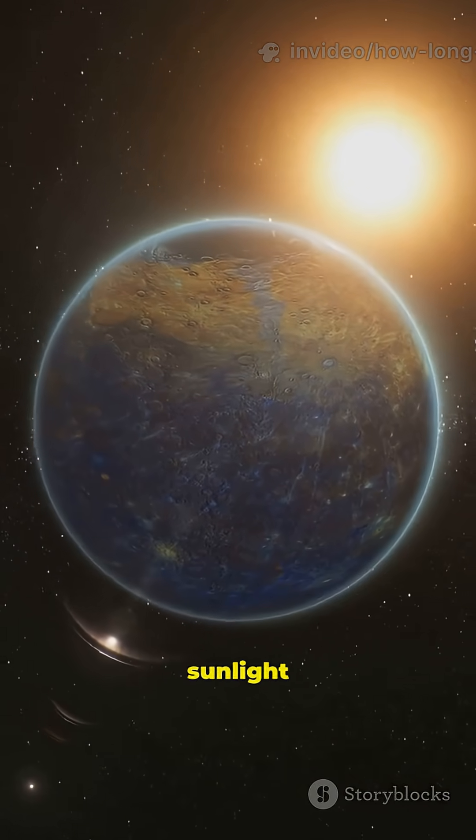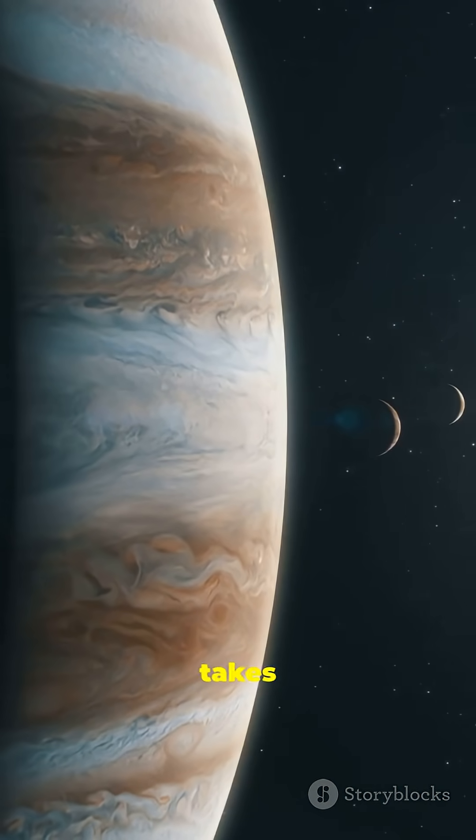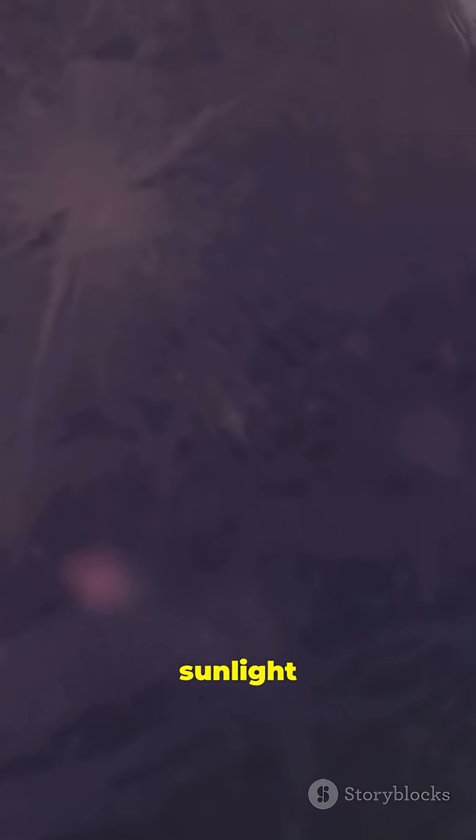Other planets: Mercury - sunlight takes about 3 minutes. Jupiter - sunlight takes about 43 minutes. Pluto - sunlight takes about 5.5 hours.